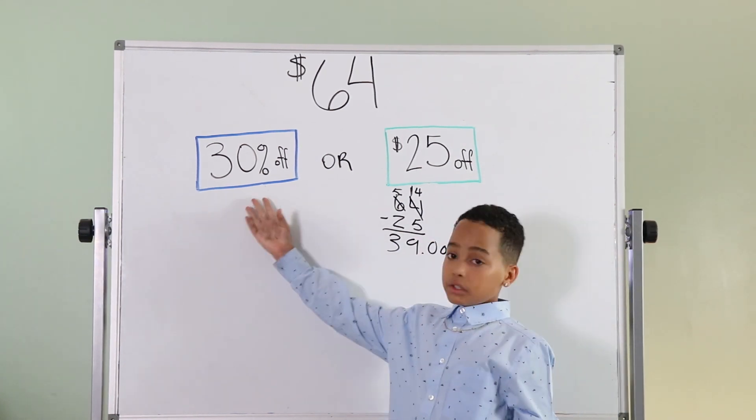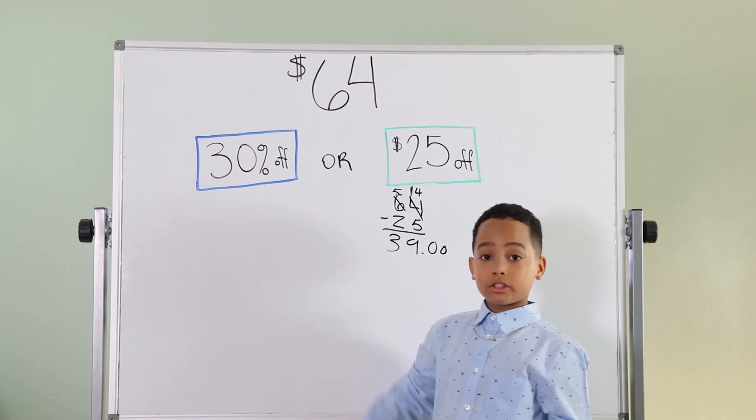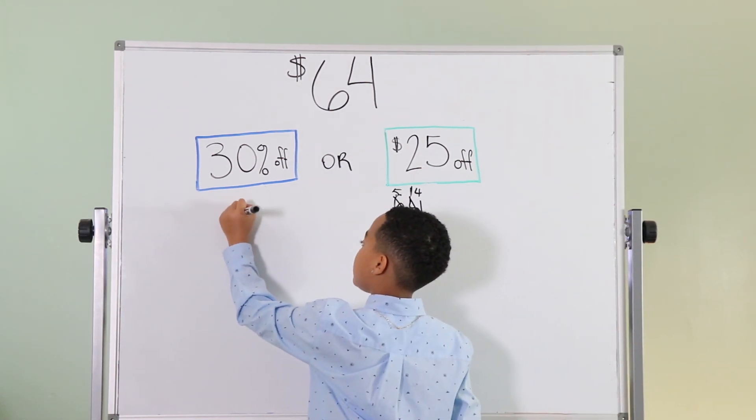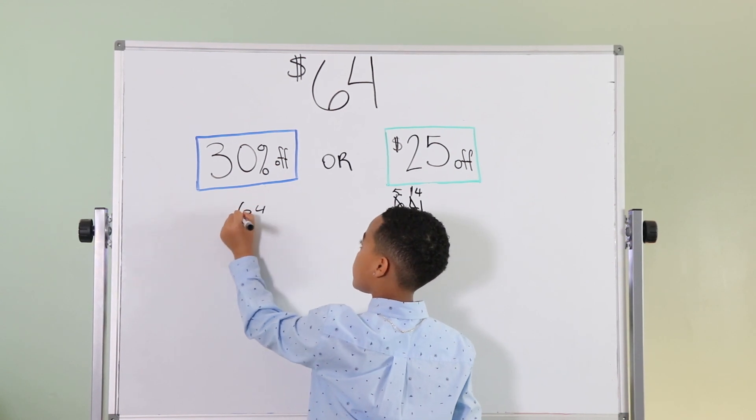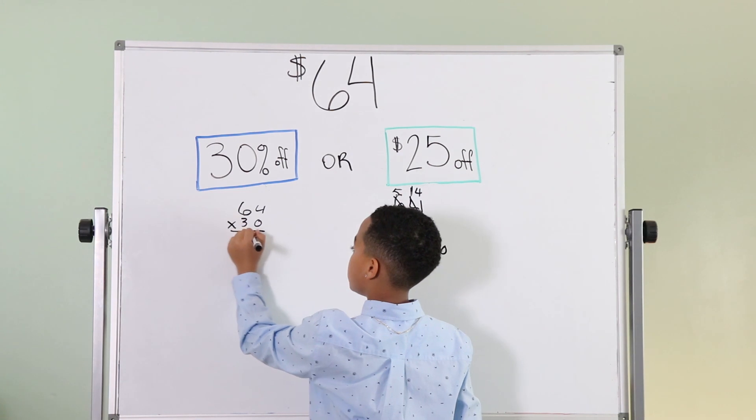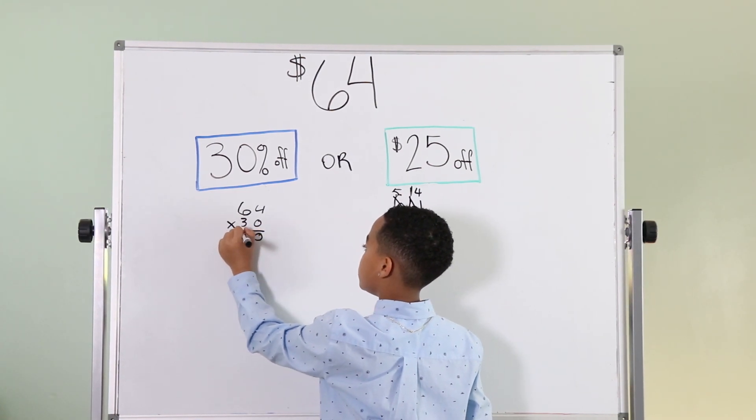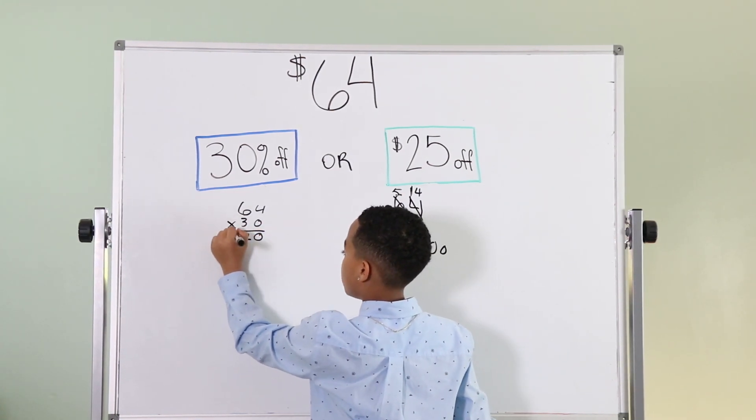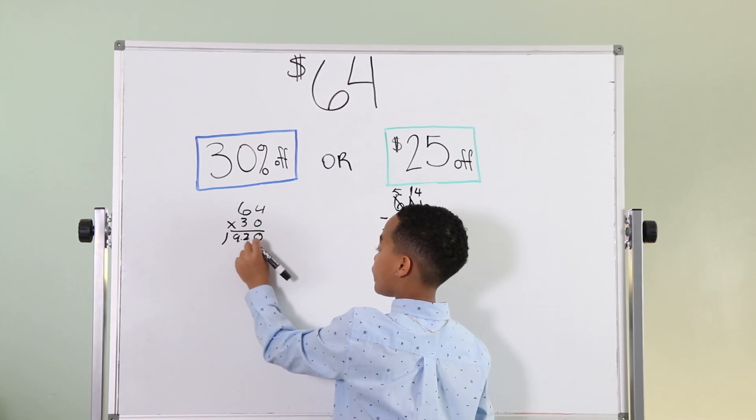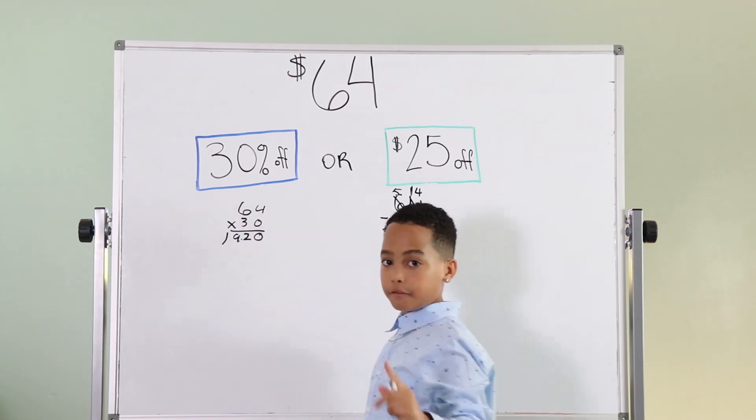Now, how do we calculate percent? First thing we're going to do is times 64 and 30. That would be 0, 2, 1, 19. Now, you put the decimal in the middle because you move it over two times to the left.